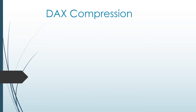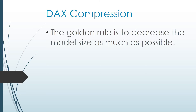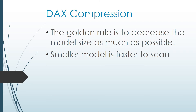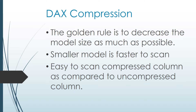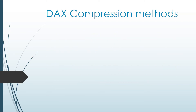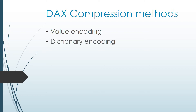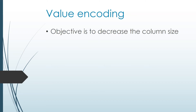We will learn about different data compression techniques to achieve maximum performance. The golden rule is to decrease the model size as much as possible. A smaller model is faster to scan, and it is easier to scan a compressed column compared to an uncompressed column. There are three data compression techniques: value encoding, dictionary encoding (also called hash encoding), and run length encoding.